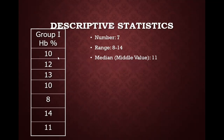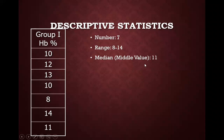This is a hypothetical example of group 1. There are hemoglobin values of 7 individuals. The lowest value is 8 and the highest value is 14, so the range of hemoglobin is from 8 to 14. If you arrange them in ascending or descending order, the middle value will be 11. Such a description of data is known as descriptive statistics.